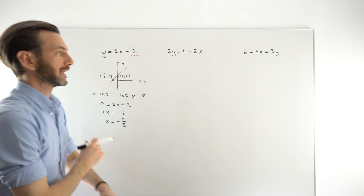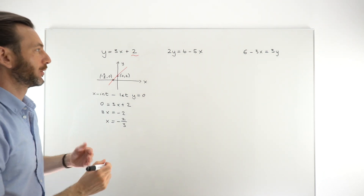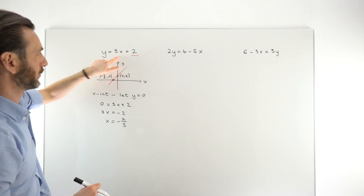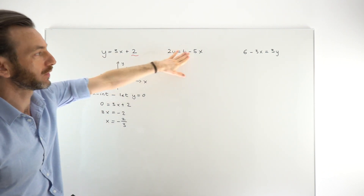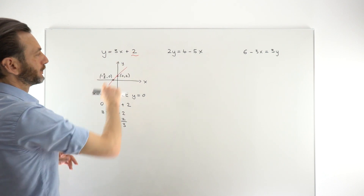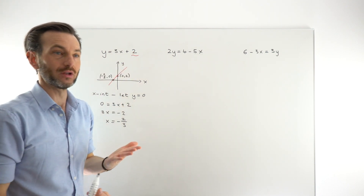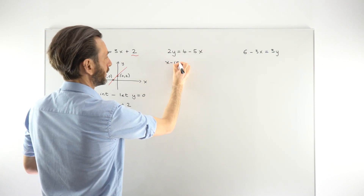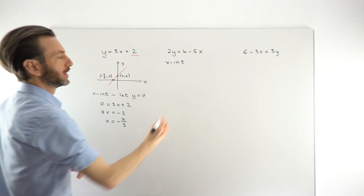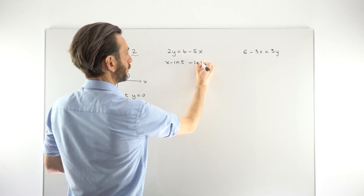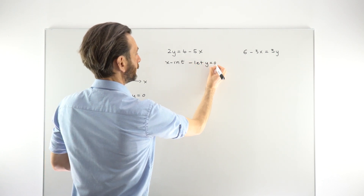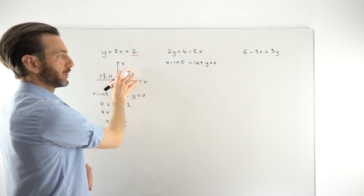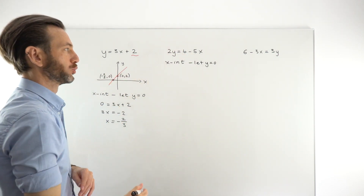It's pretty much the same technique — we don't need anything more elaborate. We just don't have the formula in the right arrangement. We could rearrange it, but that's redundant because all we need to do is take the same strategy: to find the x-intercept, let y be 0; to find the y-intercept, let x be 0. We're doing this purely algebraically.